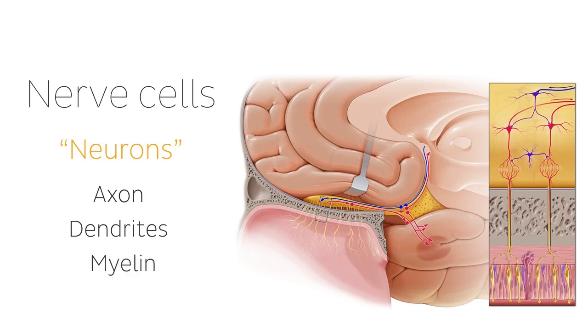Myelin functions like insulation around an electrical wire, and damage to the myelin sheath can slow or even stop impulse transmission.